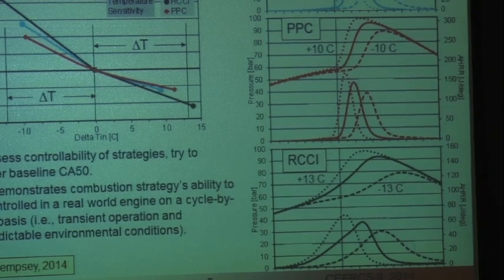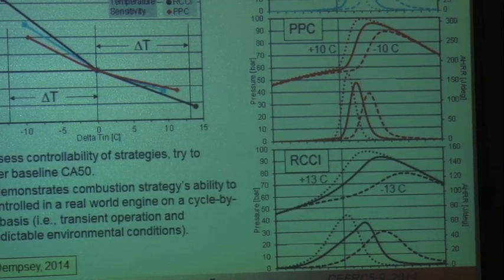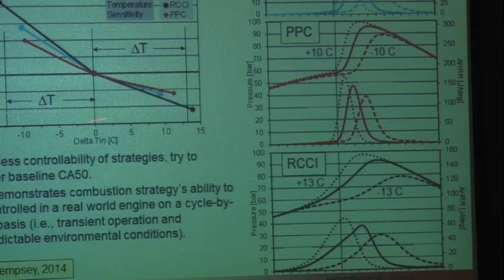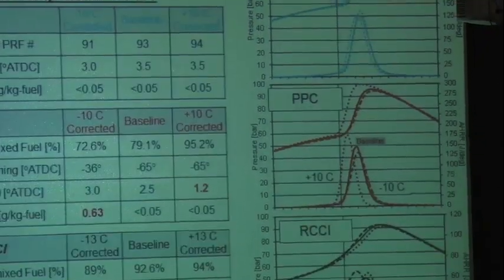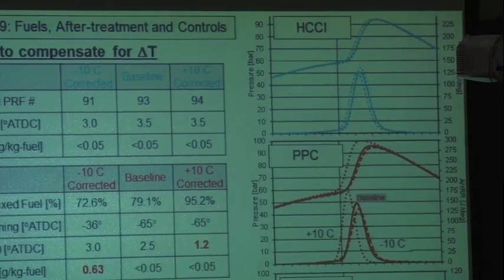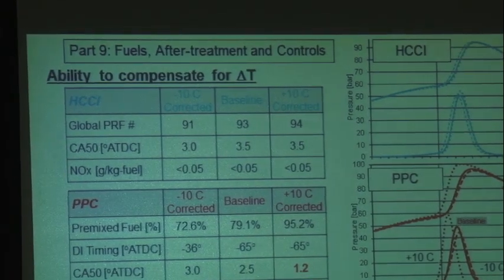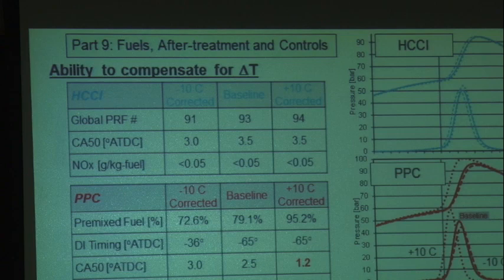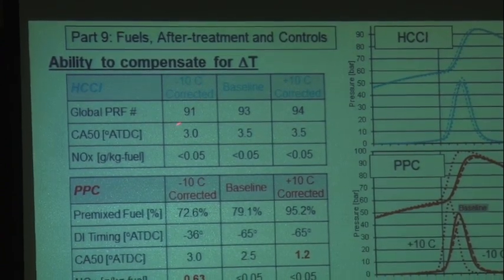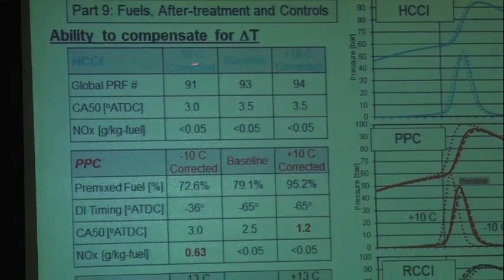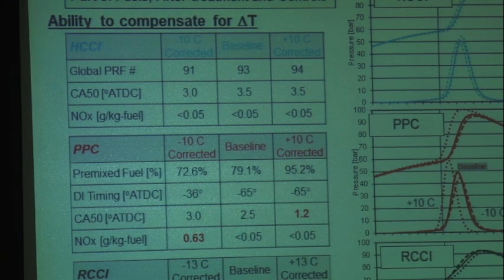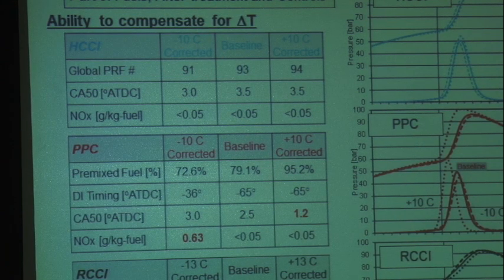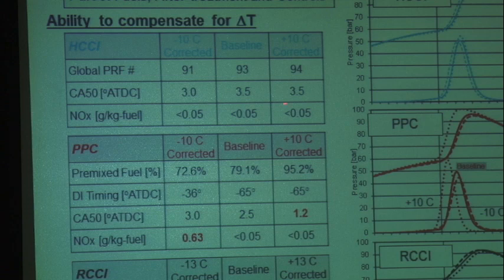If I lower the temperature, the combustion retards. Why? Because the combustion is controlled by chemical kinetics, which is very sensitive to temperature. Now the issue is: can I do something to the system to bring the combustion back to the baseline phasing? With HCCI, it turns out I can do that. By having those two injectors in the port, I can change the ratio of the isooctane and the n-heptane to make the mixture a little bit more reactive — use less of the less reactive fuel, more of the more reactive fuel — and in that way bring the phasing back to the baseline case.